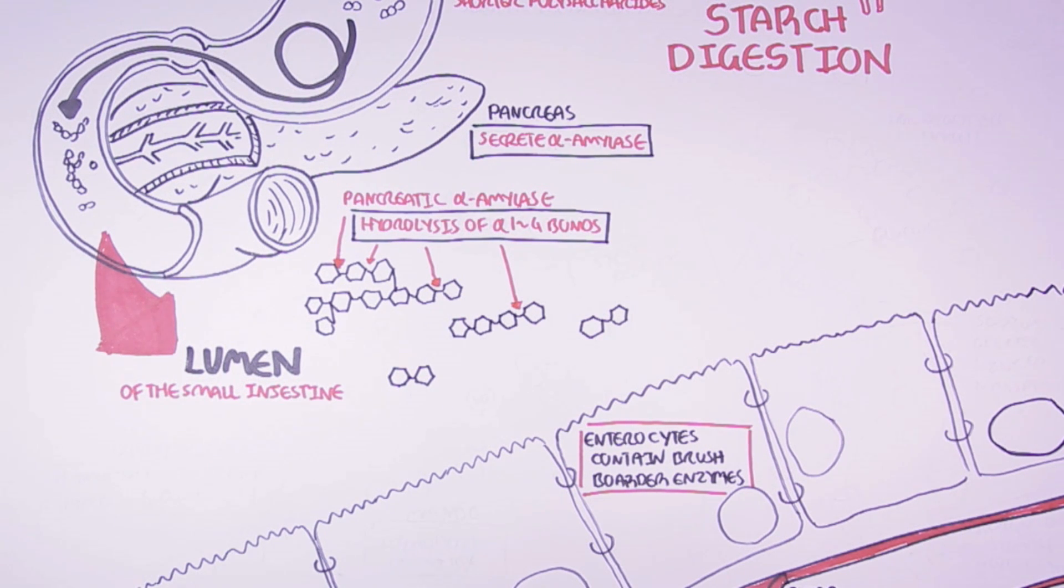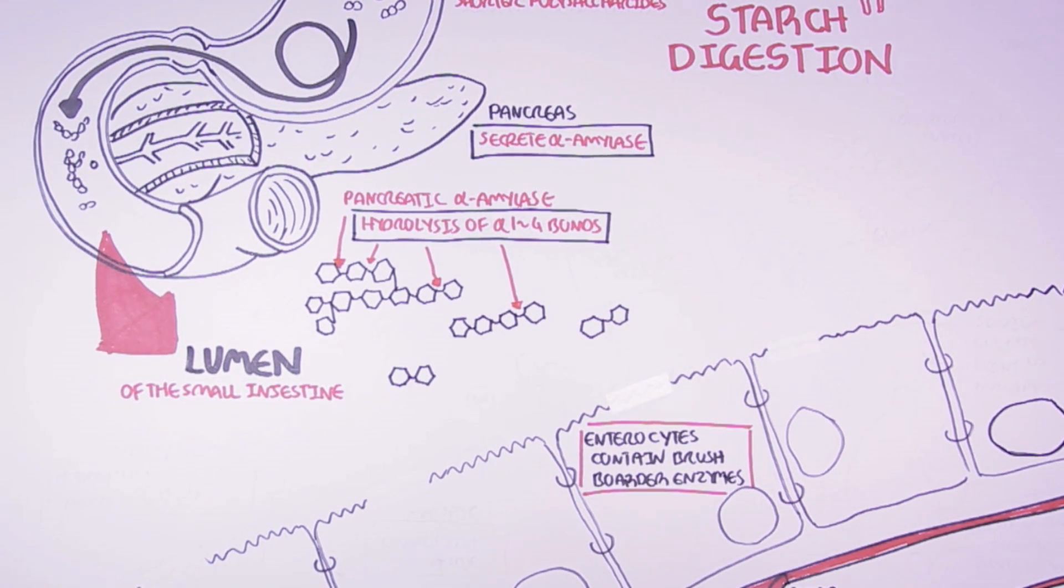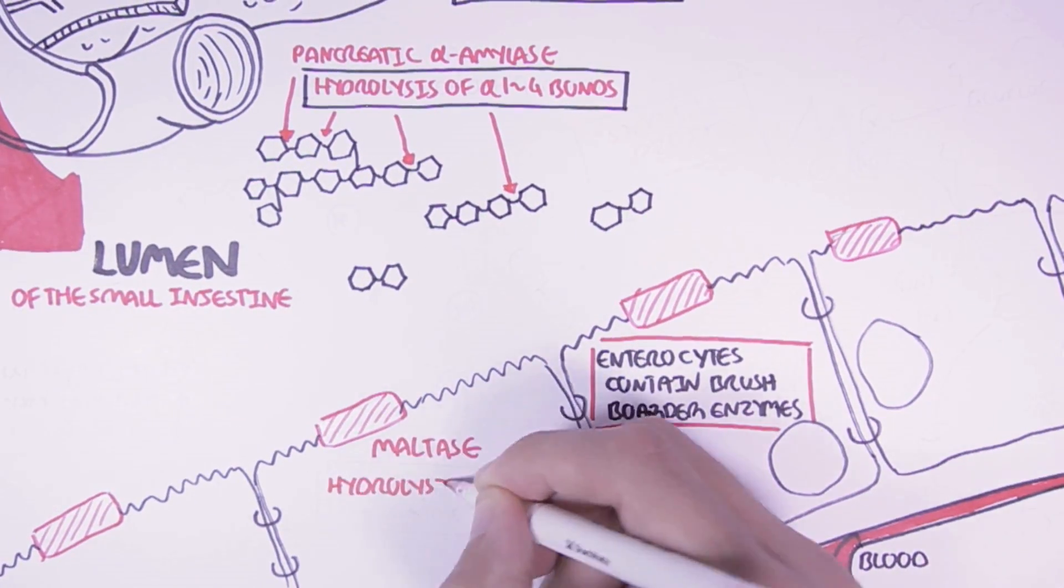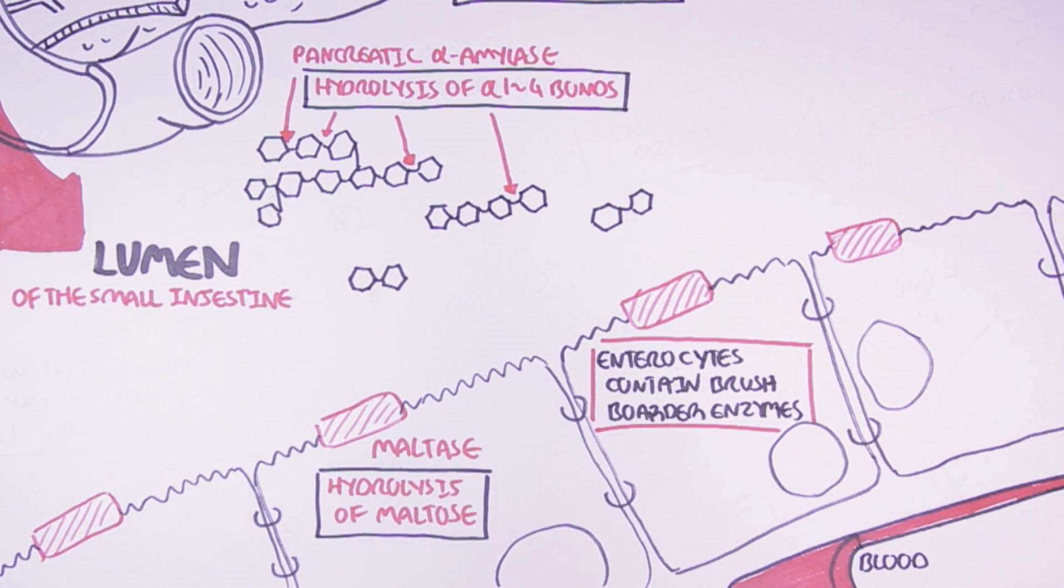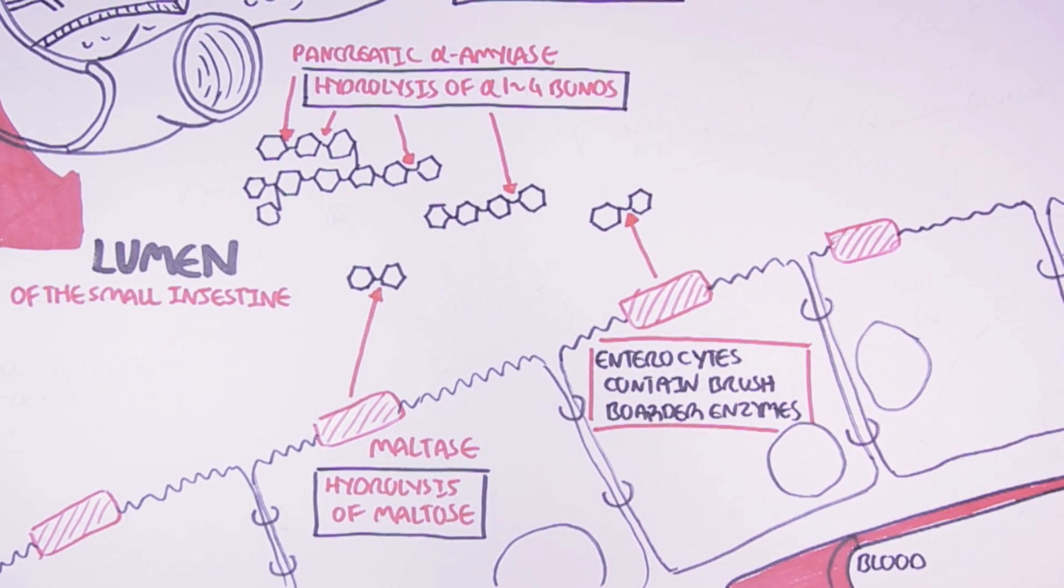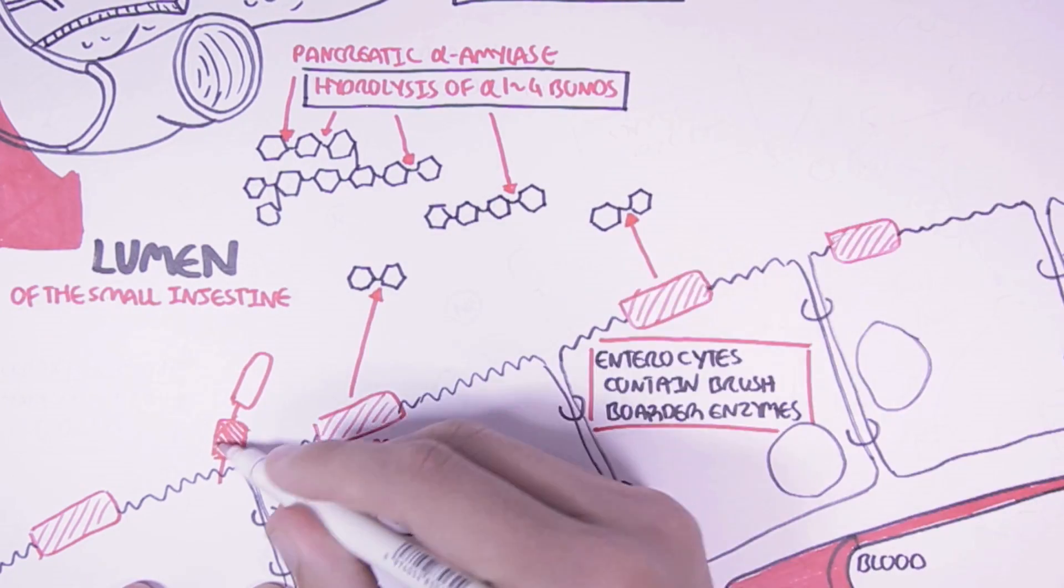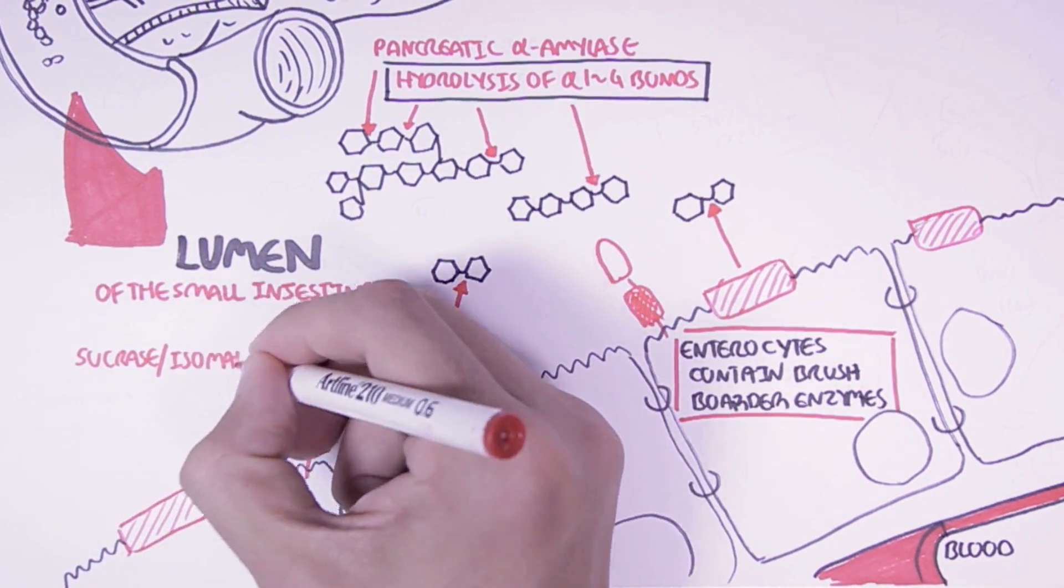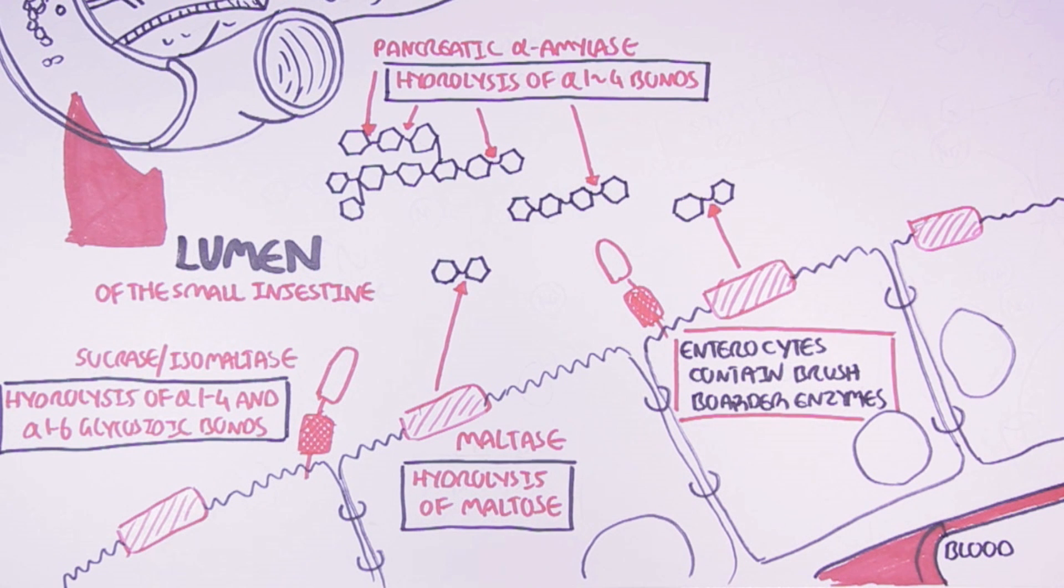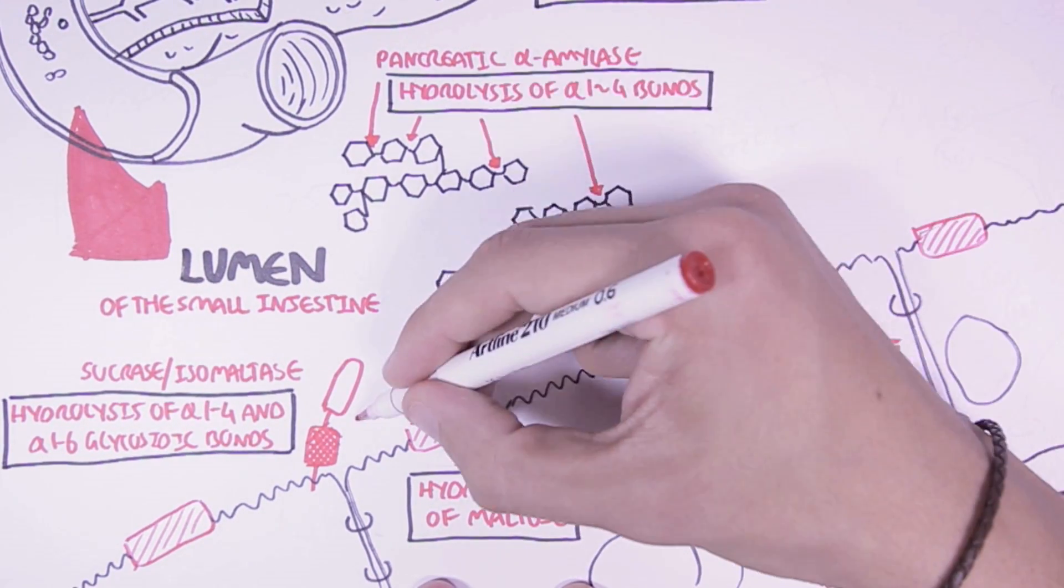The enterocytes, as I mentioned, also have enzymes called brush border enzymes that participate in the digestion of starch. These enzymes include maltase, which will hydrolyze maltose. Now maltose is essentially two glucose molecules linked together. So maltase will hydrolyze these. Then you have another brush border enzyme called sucrase isomaltase. Isomaltase will hydrolyze both the alpha-1,2,4 glycosidic bonds and alpha-1,2,6 glycosidic bonds. So what is important to know is that isomaltase will hydrolyze the branch points of starch here.